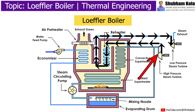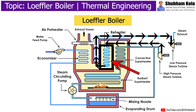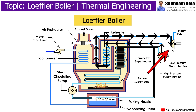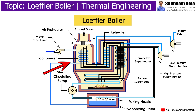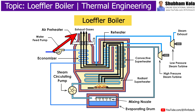The steam coming out from the high-pressure steam turbine is passed through a reheater before being supplied to the low-pressure turbine. Burn gases come into the economizer, and the remaining part is vented to the environment through the chimney.